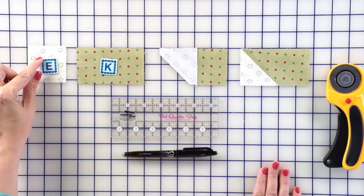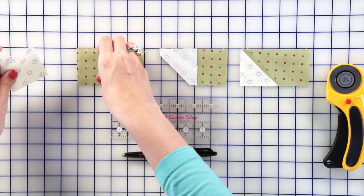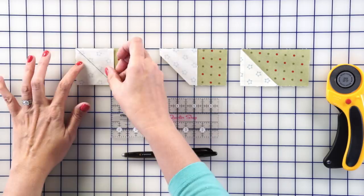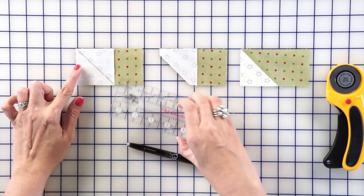To make your next unit, you're going to draw a line from corner to corner on the back of your fabric E squares. Place this on the left end of a fabric K rectangle, and just make sure you've got your line the correct direction. Stitch directly on the line, trim a quarter inch away, and press toward the green.